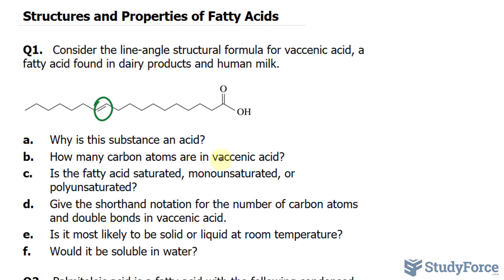In question B, how many carbon atoms are in vicinic acid? Well, if we count, we have 1, 2, 3, 4, 5, 6, 7, 8, 9, 10, 11, 12, 13, 14, 15, 16, 17, and don't forget this last one, 18.